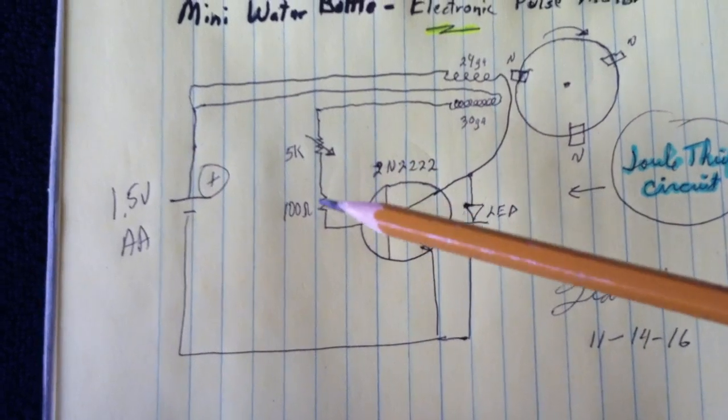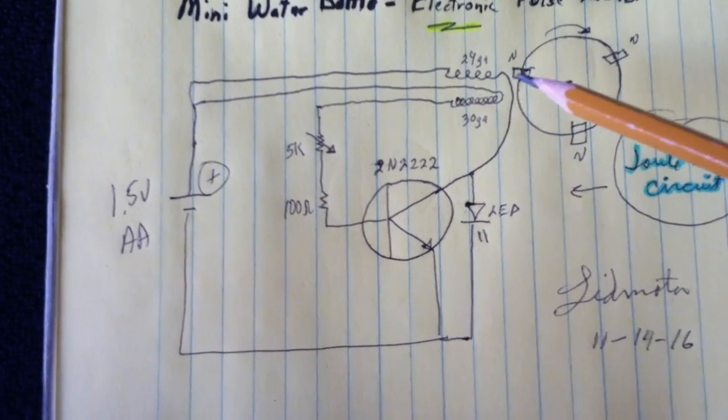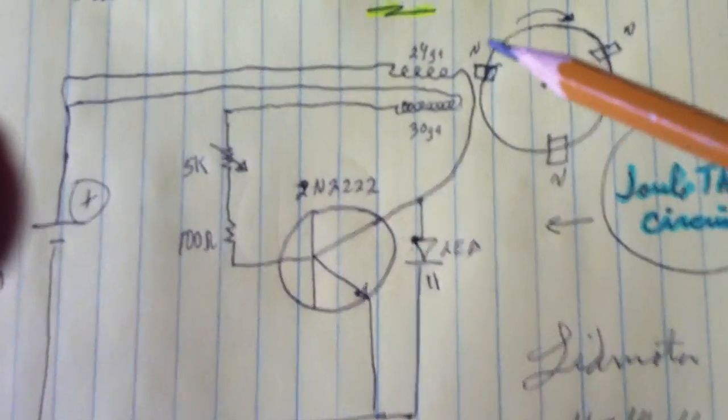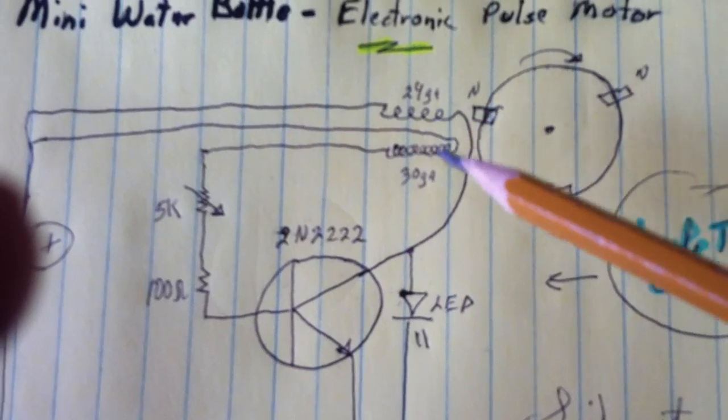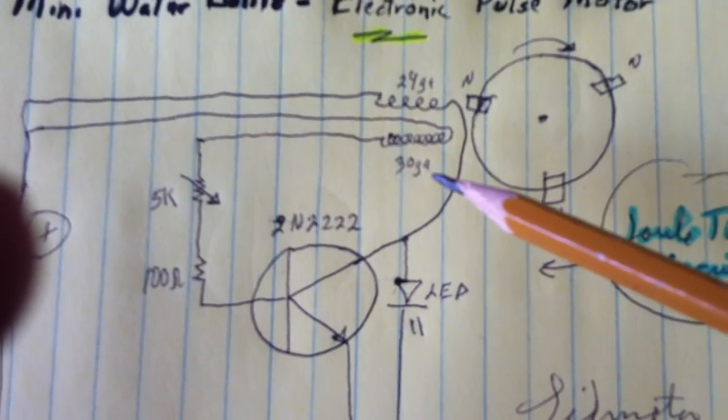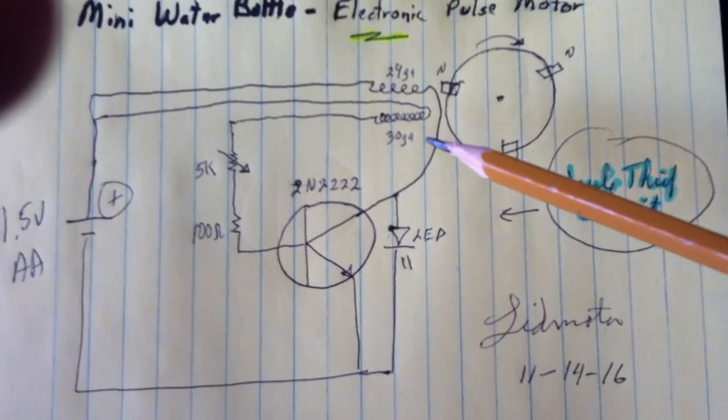and then you have the trigger coil, which is usually lighter gauge wire, and then the drive coil, which is thicker gauge wire. I'm using 24 gauge for the drive coil and 30 gauge for the trigger coil. I don't remember how many windings—I just filled up that bobbin.